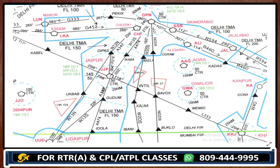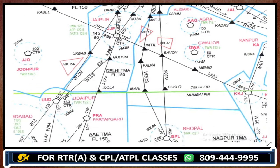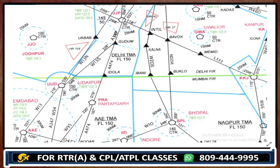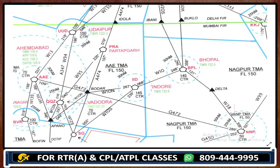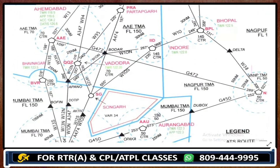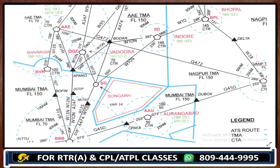That was about chart number one. Let me see if we have other restricted areas. Look over here — you can see this area with a red color boundary.